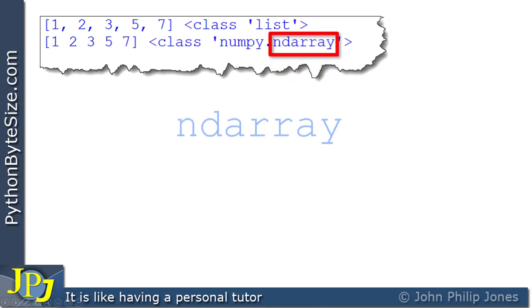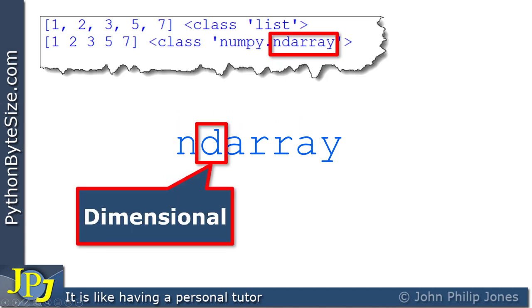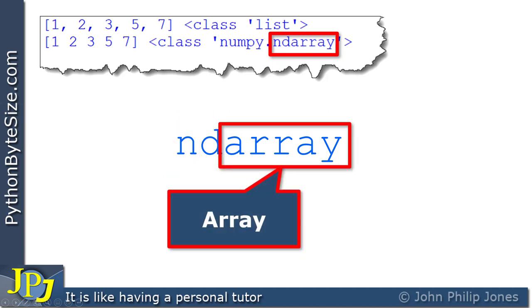Let's now consider this word here, and I'll make it a bigger font, and this N stands for number, this stands for dimensional, and clearly this stands for array.